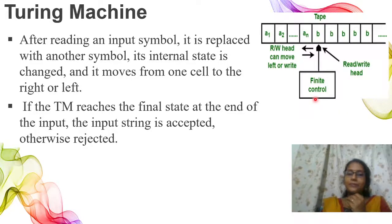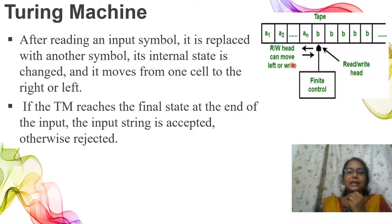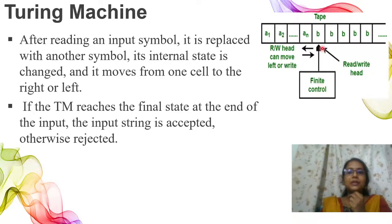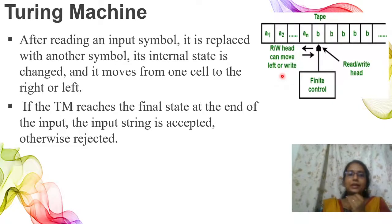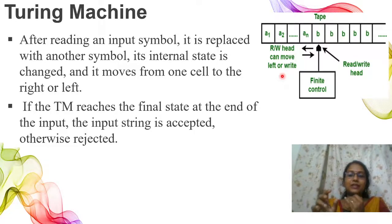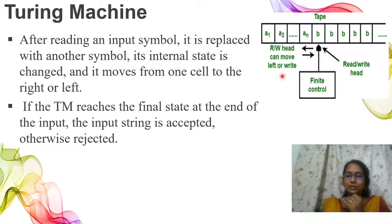If the input is accepted, then it is accepted; otherwise it is rejected. When input is read, we replace the input symbol and replace the state, then move the tape head. There are three possibilities: if our state reaches the final state — that is, the TM reaches the final state — the string is accepted; otherwise it will be rejected.